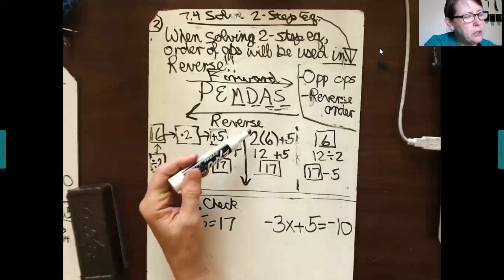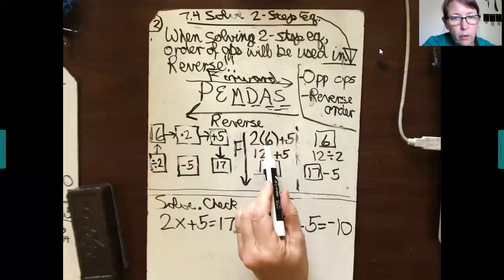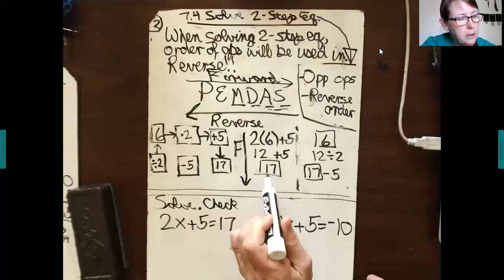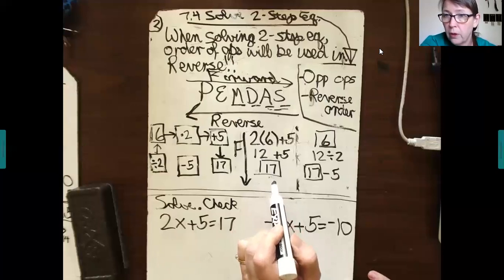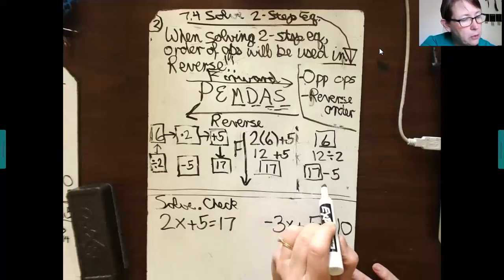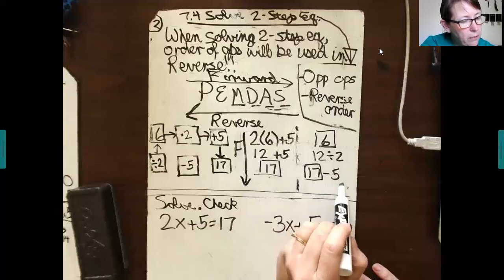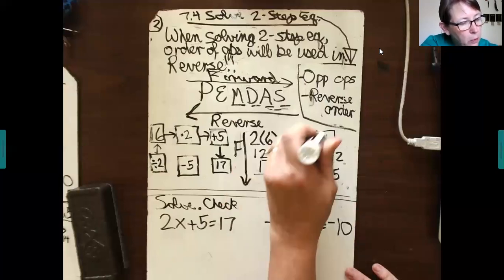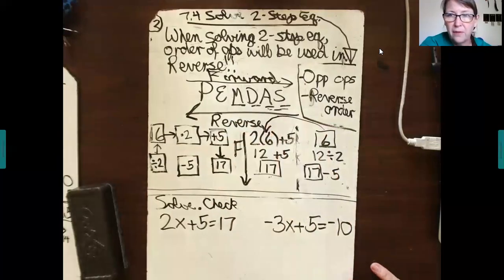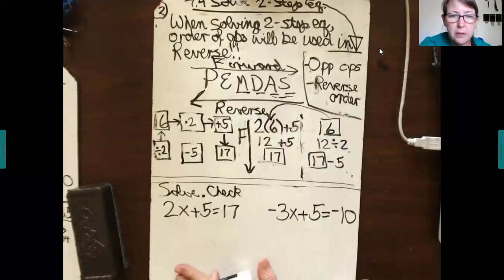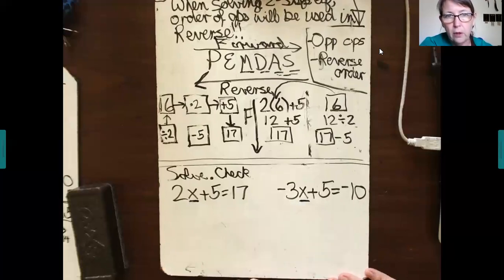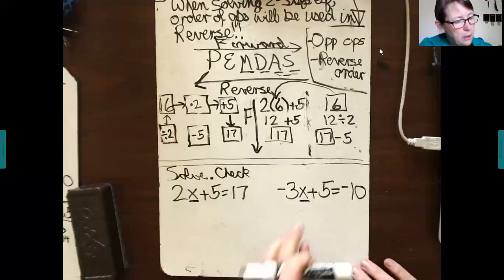So what am I doing here? I took an expression using order of operations in the forward order and found out that the sum of my expression is 17. Then if I go in reverse order of the opposite operations, I walk through. Instead of add 5, I subtract 5, the opposite. The opposite of multiply by 2 is divide by 2. Look, I ended up with 6, which is what is inside that set of parentheses. Well, instead of having parentheses, you're going to have some unknown. You're going to have an unknown, you're going to have a variable. Let's see how it plays out.